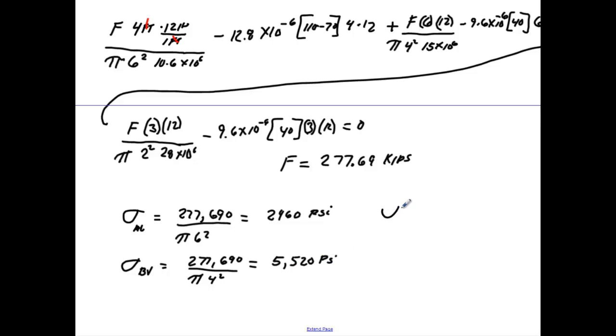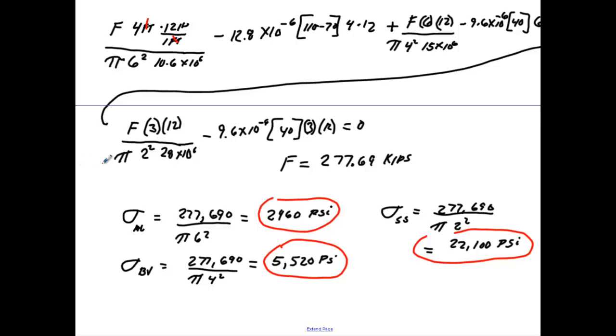And then the last one is to do the stainless steel. 277,690 psi over pi times the radius squared, which is 2 squared. And when you run that value, you get 22,100 psi. And that's all you really have to do then. It's not too bad. Circle these answers. Circle these answers. And circle these answers. Just follow these steps in the problem and you'll be just fine.